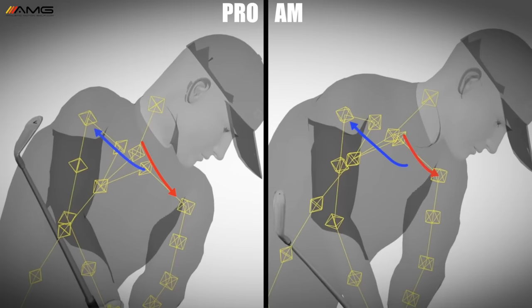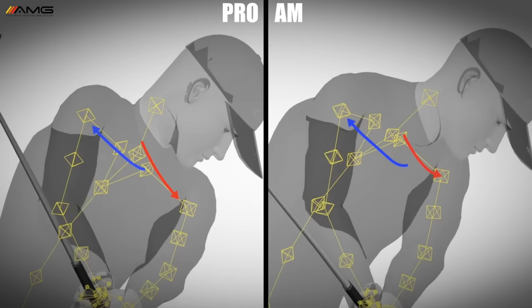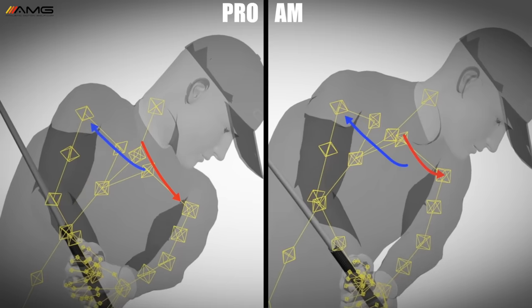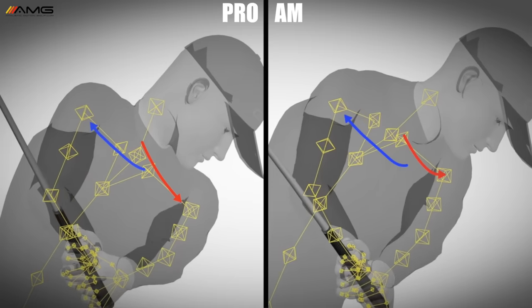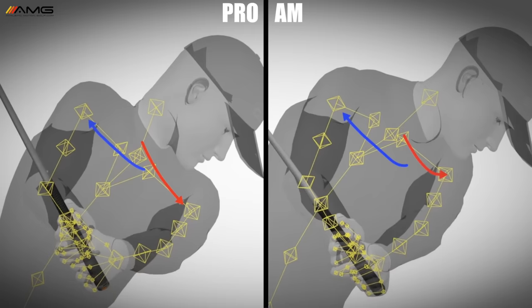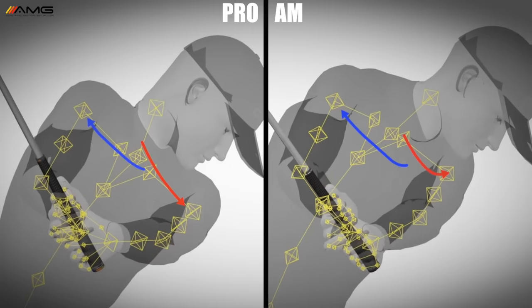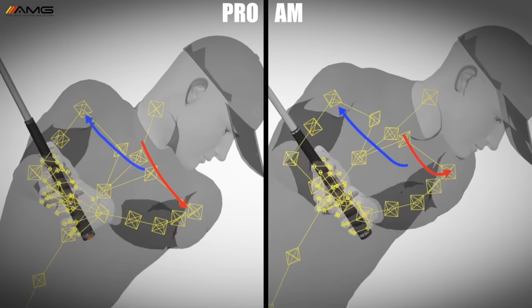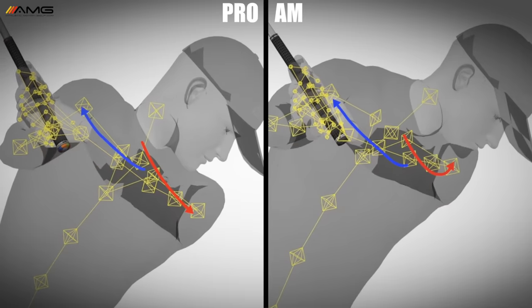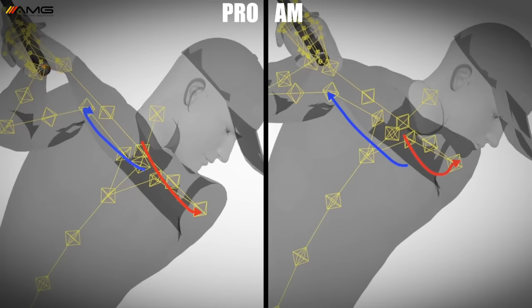There's a lot going on here when the shoulders start covering up other parts of the body, so this will make it easier. The blue arrow is tracing the right shoulder and the red arrow is tracing the left shoulder.